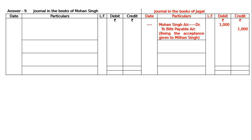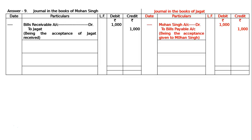In the books of Mohan Singh, that will be Bills Receivable Account debited to Jagat — being the acceptance of Jagat received. Mohan Singh drew the bill on Jagat; Jagat signed it and sent it to Mohan Singh. Hence, after receiving the bill, Mohan Singh will write this journal.